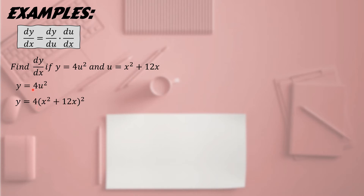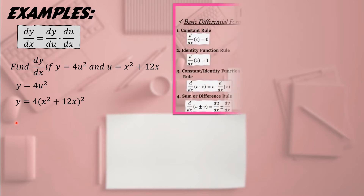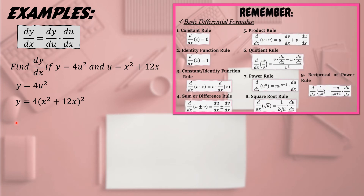The exponent 2 must stay outside the open and closed parenthesis because if it were inside, it would not distribute to both terms — it would only apply to 12x. Now that we have substituted u, let us use the power rule since there is an exponent on the quantity (x² + 12x).